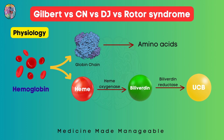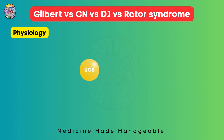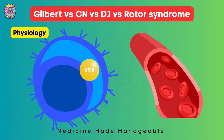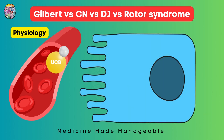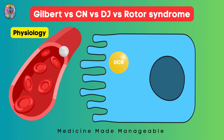This breakdown of hemoglobin into unconjugated bilirubin mainly occurs in the reticuloendothelial cells. Unconjugated bilirubin must then be transported to the liver cells to get conjugated. Since it is lipid soluble and cannot dissolve in blood, albumin binds to it for transport. Once it arrives at the liver cells, albumin is released and UGT1A1 converts unconjugated bilirubin into conjugated bilirubin.